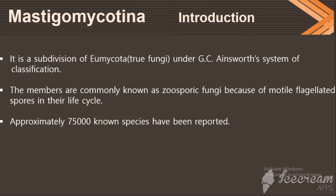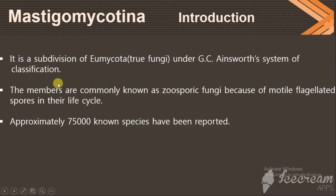Here we are discussing the introduction of Mastigomycotina. It is a subdivision of fungi under G.C. Ainsworth's system of classification. Mastigomycotina members are called zoosporic fungi because they have motile flagellated spores in their life cycle.